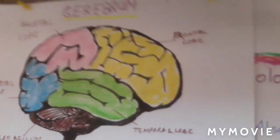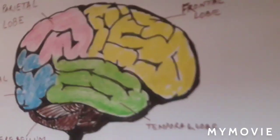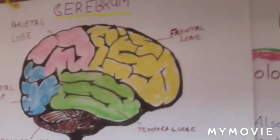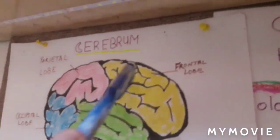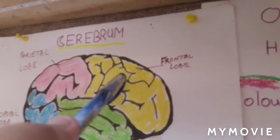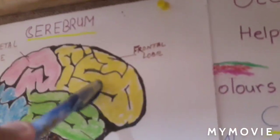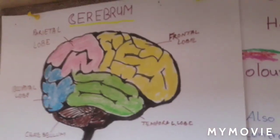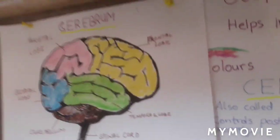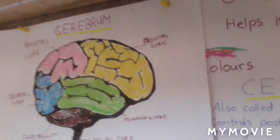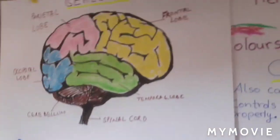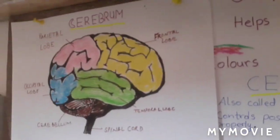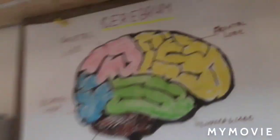Now let's look at the first lobe — the frontal lobe. You can see it in yellow. It is present at the forehead. The brain has two sides: the left half and the right half.